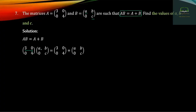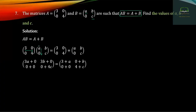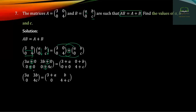First row, first column: three A, kind of zero. First row, second column is amazing. The answer is 3A, 3B, 0, 4C.